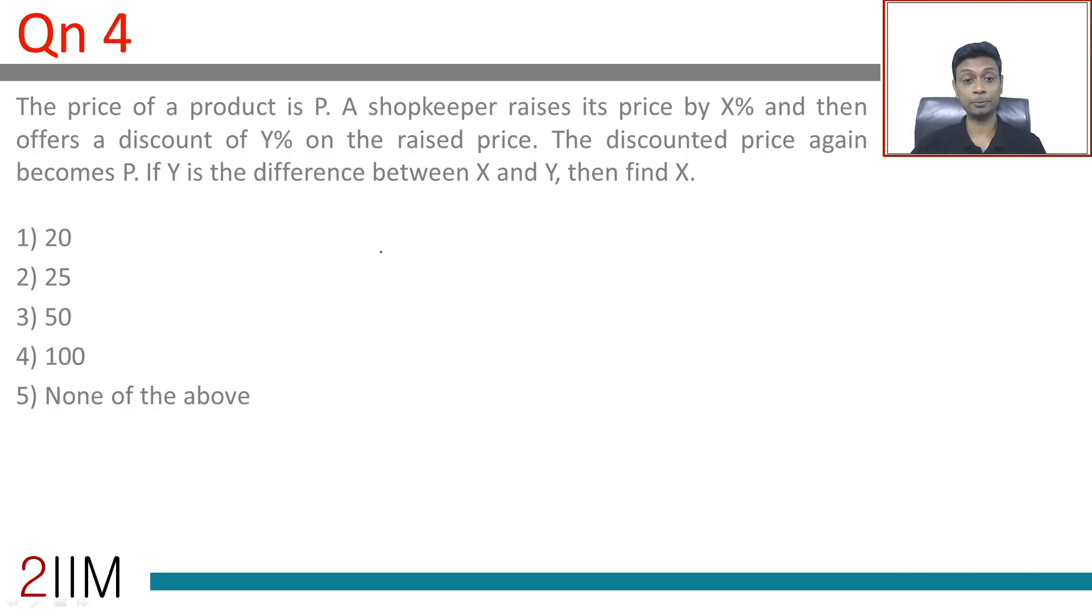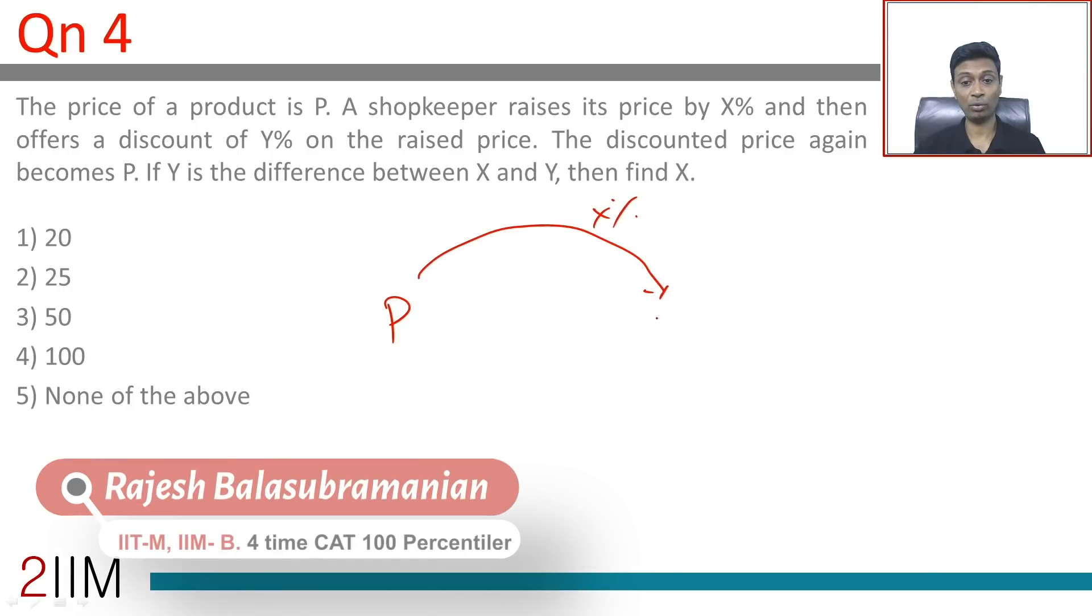The price of a product is P. A shopkeeper raises its price by X percent and then offers a discount of Y percent on the raised price. The discounted price again becomes P.